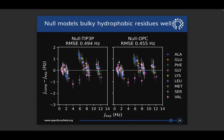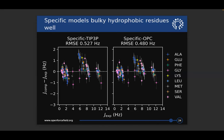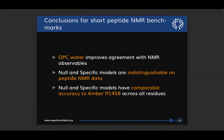Looking at the same plot for the null model, we do much better on those bulkier hydrophobic residues but do a little bit worse on the smaller alanine and glycine side chains. We see a similar story for the specific model: compared to FF14SB, it does much better on larger side chains at the cost of slightly worse performance on alanine and glycine. To summarize, using OPC water improves agreement with NMR observables, the null and specific models are pretty much indistinguishable on this benchmark, and when compared across all residue types, these optimized SMIRNOFF models have about the same accuracy as FF14SB for these small unstructured peptides.